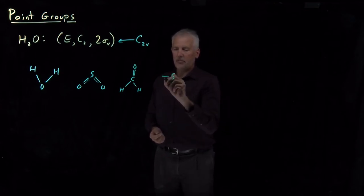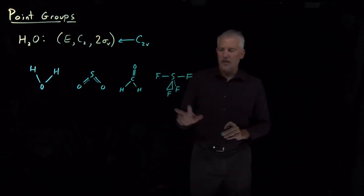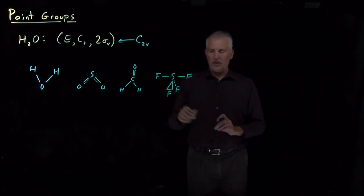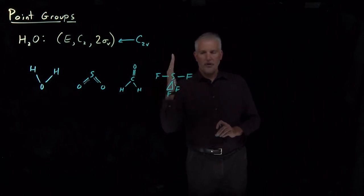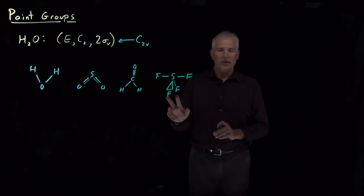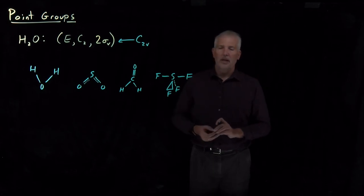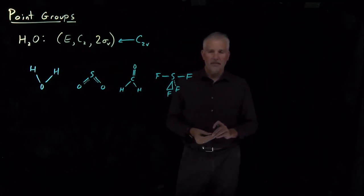Even more surprisingly, there are other molecules in the C2V point group. For example, a molecule with T-shaped geometry — which I'll draw in sawhorse geometry — is also C2V. Again, there's a two-fold rotation with the same C2 axis, a symmetry reflection plane in the plane of the board, and a reflection plane bisecting the molecule the other way. Those are the only symmetry elements for this molecule.